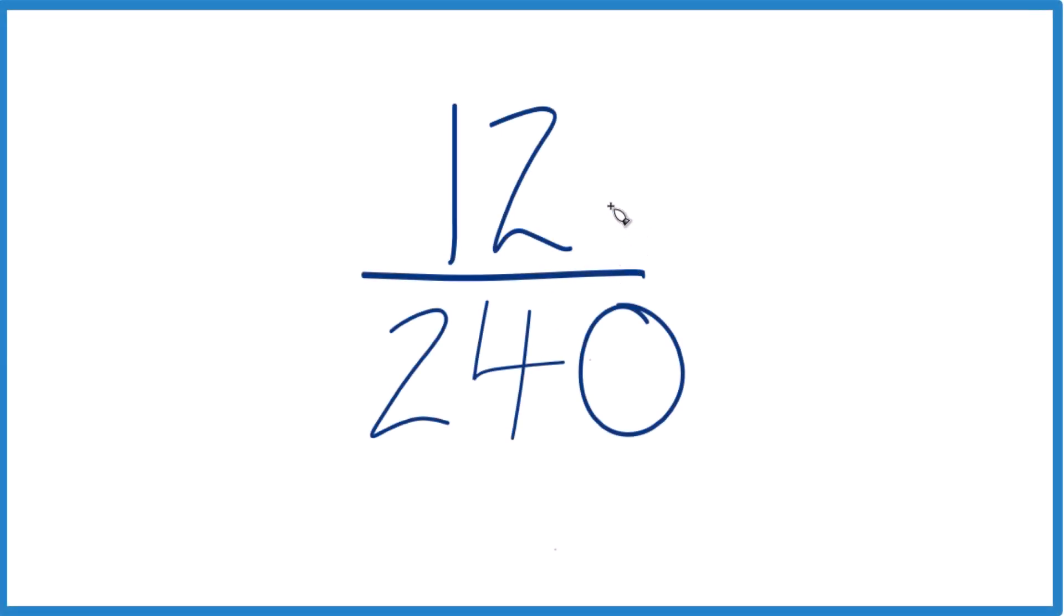Let's take a look at how we can simplify this fraction. We have 12 over 240, so 12 240ths.